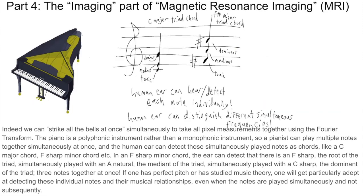The piano is a polyphonic instrument rather than a monophonic instrument, so a pianist can play multiple notes together simultaneously at once, and the human ear can detect those simultaneously played notes as chords — like a C major chord, an F sharp minor chord, etc. In an F sharp minor chord, the ear can detect that there is an F sharp (the root of the triad) simultaneously played with an A natural (the mediant of the triad) simultaneously played with a C sharp (the dominant of the triad) — three notes together at once.